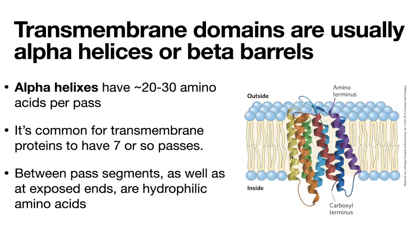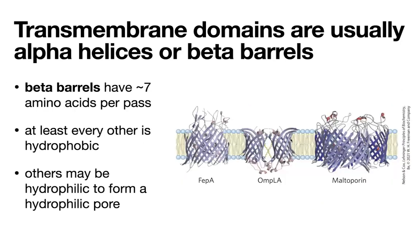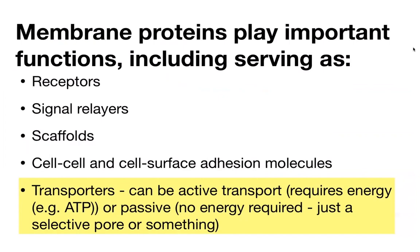With alpha helices, things are more compact so you have more amino acids per pass compared to beta strands. At the end of the day, you have hydrophobic parts on the outside and hydrophilic parts on the inside of your pore. Amino acids sticking into the pore help control pore size and selectivity. Now that we know how membrane proteins can get through the membrane, let's talk about how they help other things get through — serving as transporters, channels, and pores.